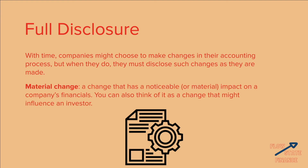The most important thing to take away is the idea of material changes. A material change is a change that has a notable or material impact on a company's financials — think of it as a change that might influence an investor. If there are small changes made by an individual accountant or department over the course of a quarter that don't have a big impact on the end results of the financials, they don't really have to disclose those.